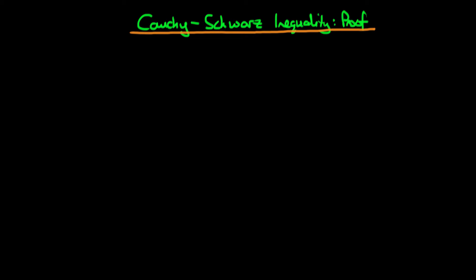In this video, I want to provide a proof of the Cauchy-Schwarz inequality. First, we need to define some sequences. I'm going to define a sequence xi as a sequence of x1, x2, all the way through to xn.